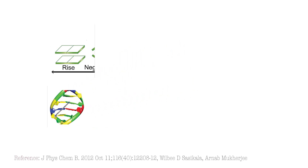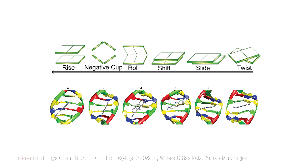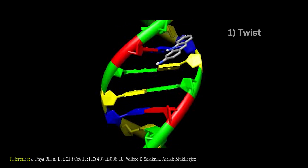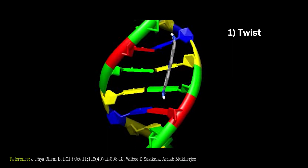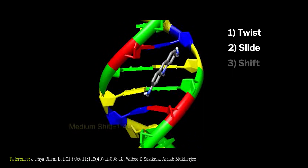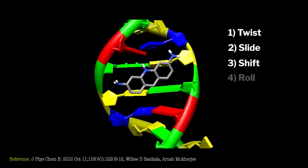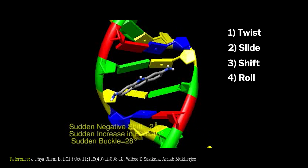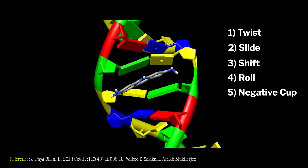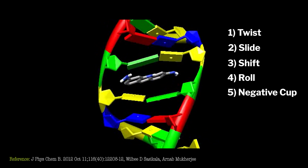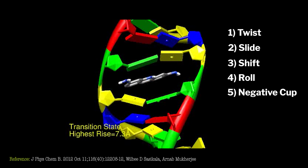When the proflavin molecule approaches DNA, a six-step process occurs. First, the molecule tries to twist the targeted base pair; upon failure, it tries to slide or shift the base pair. The twisting and sliding do not create enough space to accommodate the incoming proflavin. When maximum sliding is reached, the generated pressure causes the base pair to tilt and open up — that is the point where the molecule finds space to enter.